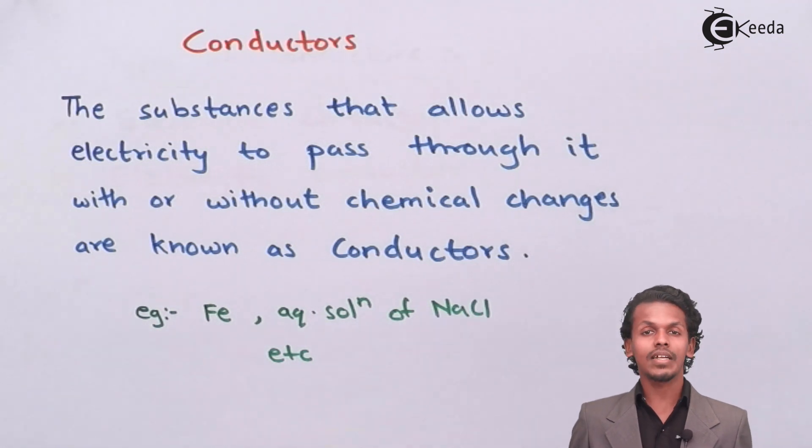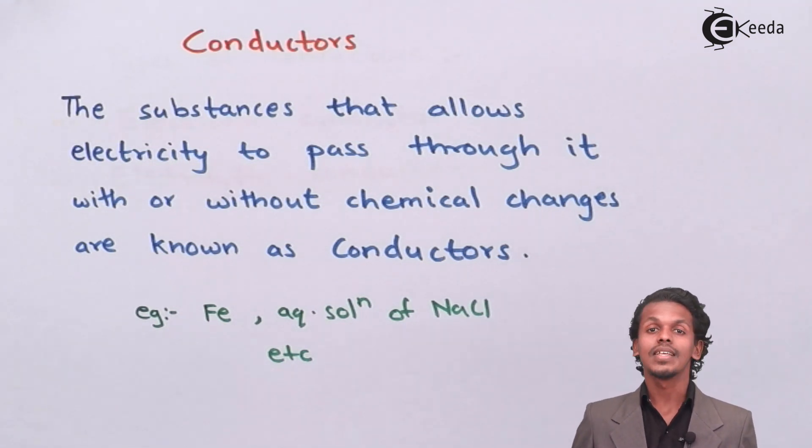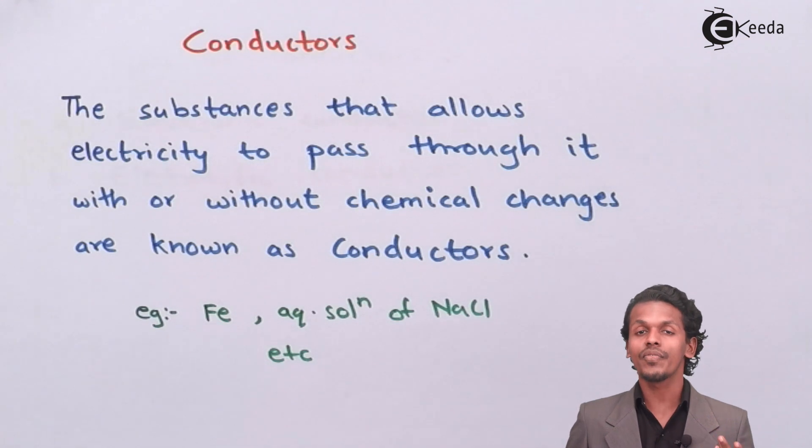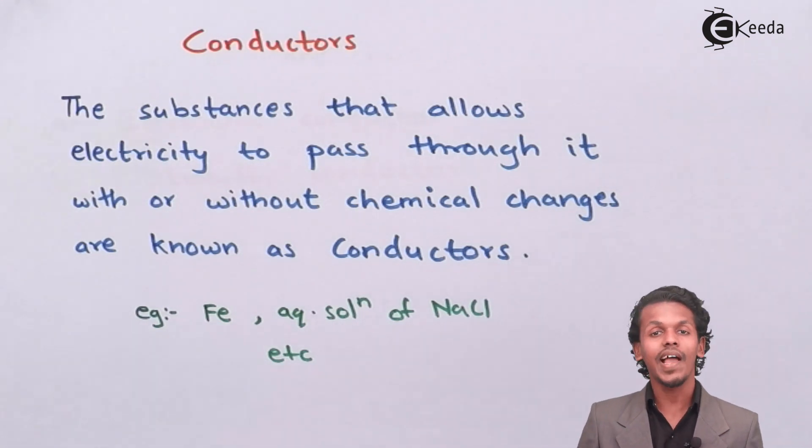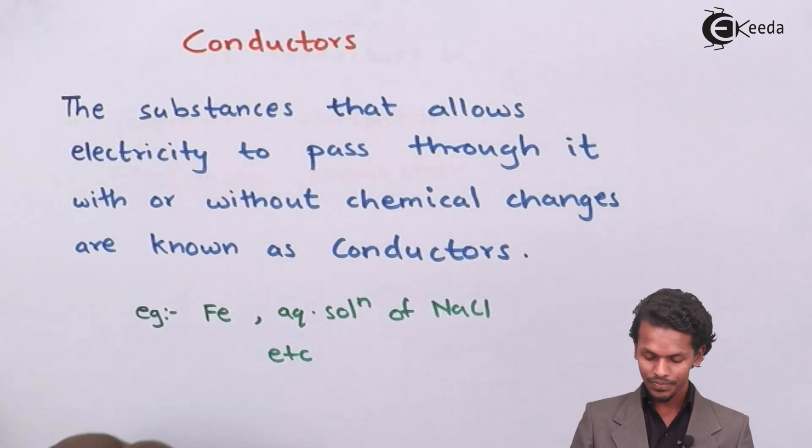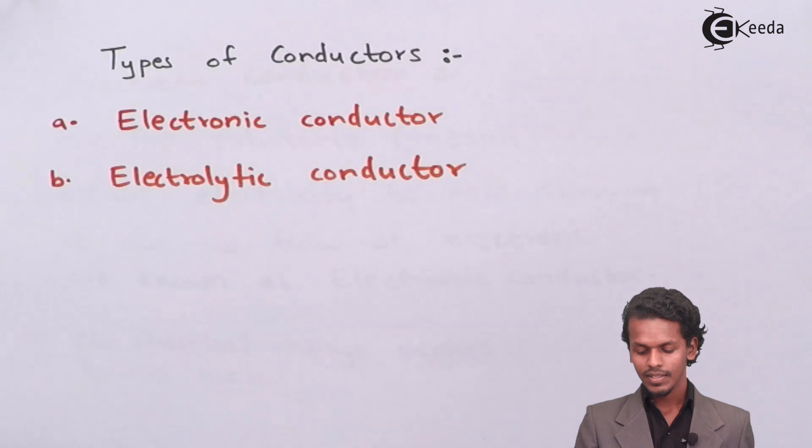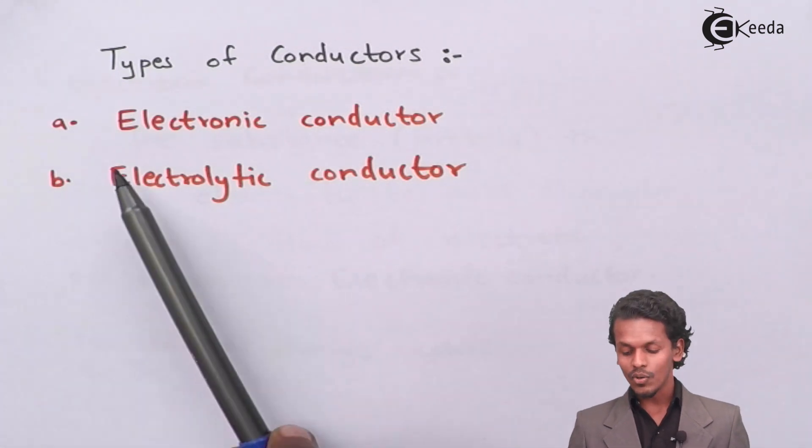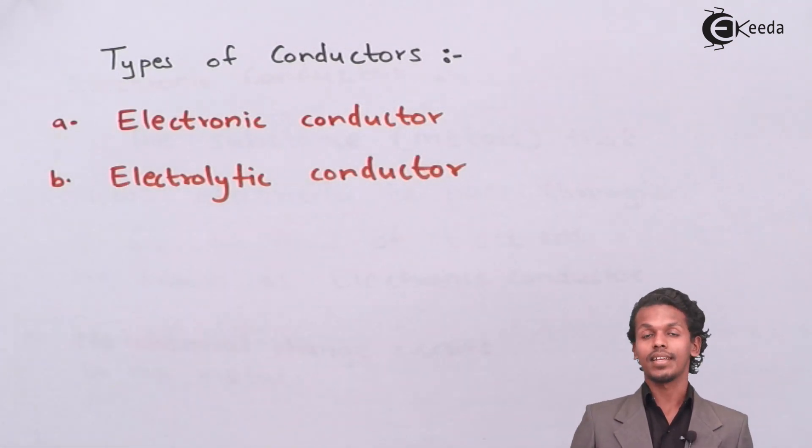You cannot pass electricity through a polymer like plastic because it doesn't consist of free electrons or free ions that would help to conduct the electricity, and hence they are bad conductors or known as insulators. But conductors are being classified into two types: electronic conductor and electrolytic conductor.